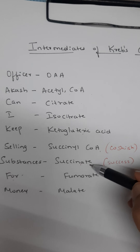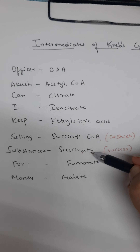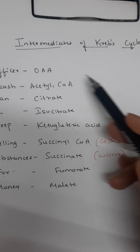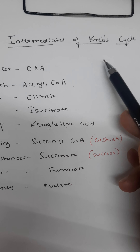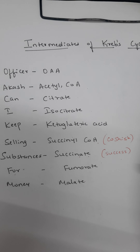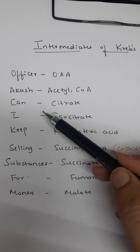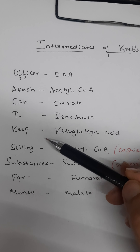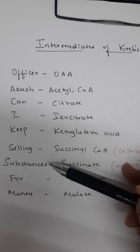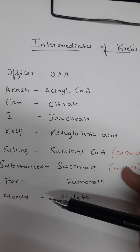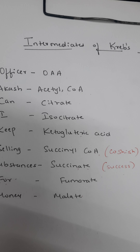So these are the tricks to remember the intermediates of Krebs cycle: 'Officer Akash Can I Keep Selling Substances For Money.' Thank you.